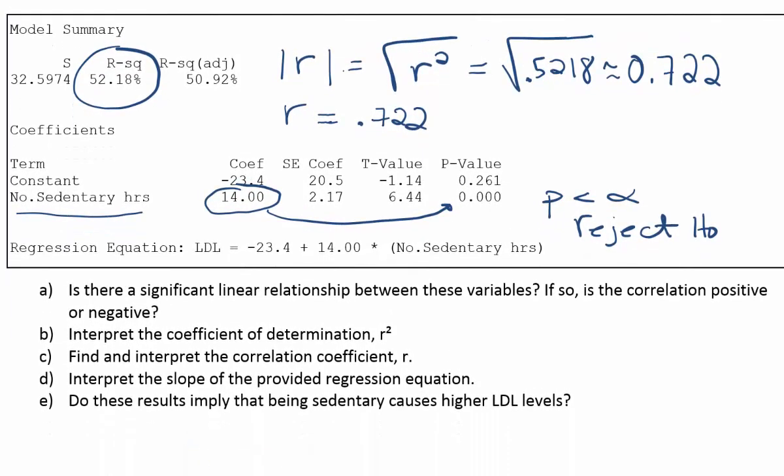So for question D, it says, interpret the slope of the provided regression equation. Whenever you're interpreting slope, remember, the slope represents the change in the y variable that you get for every unit change in the x variable. So what that means in this particular problem is to say that as the number of hours spent sitting each day increases by one, you get a 14 point increase in the LDL cholesterol level.